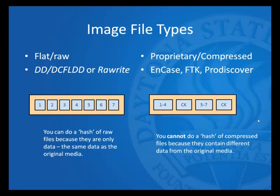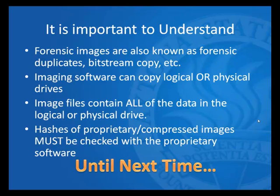The downside is you cannot hash the compressed files directly because they contain different data than the original media — they include the original data in compressed form plus additional data such as checksums. So forensic images are also known as forensic duplicates or bitstream copies. Imaging software can copy logical or physical drives, and image files contain all of the data in the drive being copied. Hashes of proprietary or compressed images must be checked with the proprietary software because they contain additional data that will be misread by hash programs that only read raw data. That's the quick and dirty on forensic images.